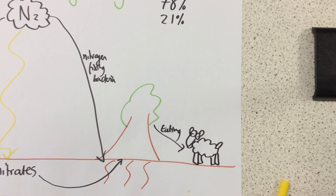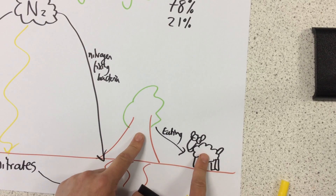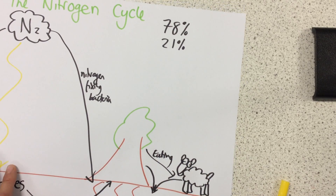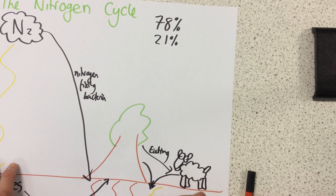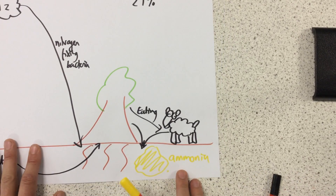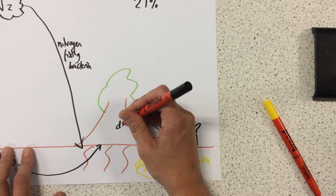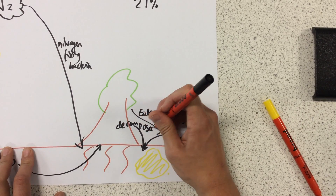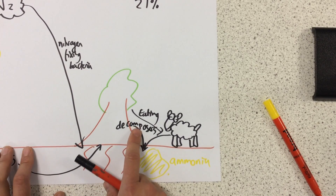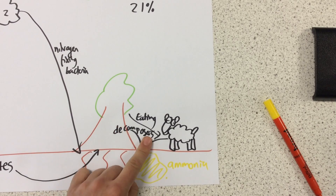What happens next? The animal and the plants can die and decompose, and when they decompose they produce a substance called ammonia. What breaks them down? We're introduced to our next type of bacteria, which are called decomposers. What decomposers do is break down plants and animals into ammonia — they allow things to decompose.